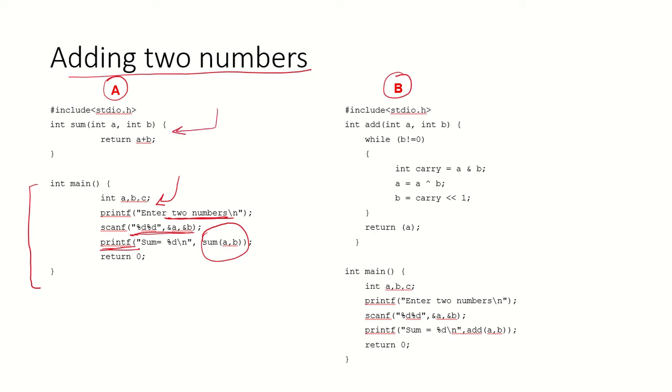This is the function called sum. It takes two integer variables and returns A plus B, which is the addition of these two variables. This is one algorithm, one way of computing the sum of these two numbers.